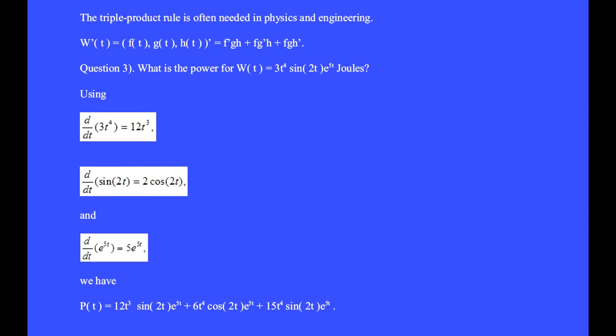Using the triple product rule: the time derivative of 3t⁴ is 12t³, the time derivative of sin(2t) is 2cos(2t), and the derivative of e^(5t) equals 5e^(5t).